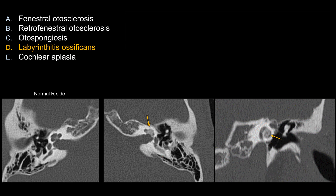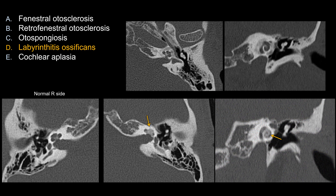Now, what about the other answer choices that do not work as well in this case? For choice A, otosclerosis and otospongiosis — as you know, otosclerosis and otospongiosis are the same thing, even though they sound kind of opposite each other, but they are the same entity.